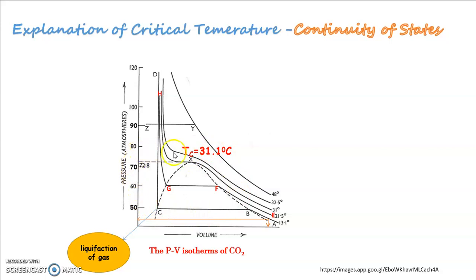A careful examination of the isotherm shows that it is possible to convert liquid carbon dioxide into gas and vice versa, gases carbon dioxide into liquid without any discontinuity, that is, without having more than one phase present at any time. On joining the ends of the horizontal portion of the various isotherm, a boundary curve C, G, X, F, B, represented by the dotted line is obtained.